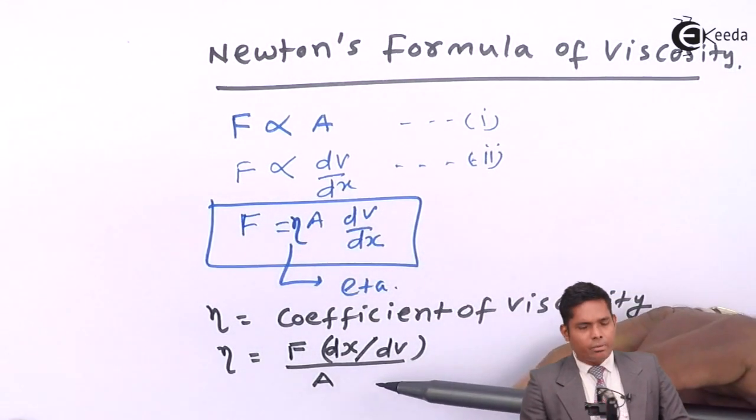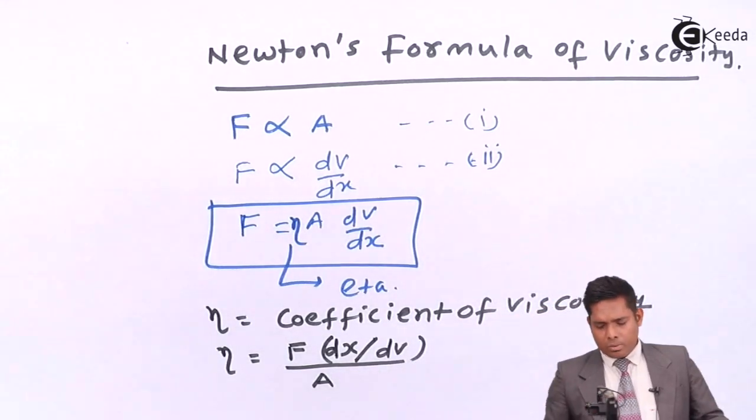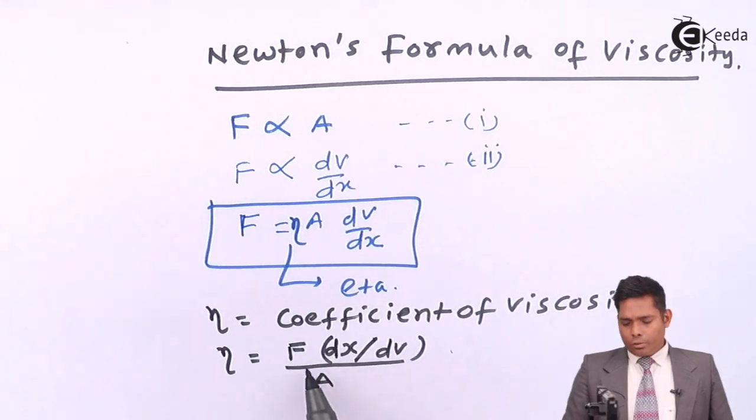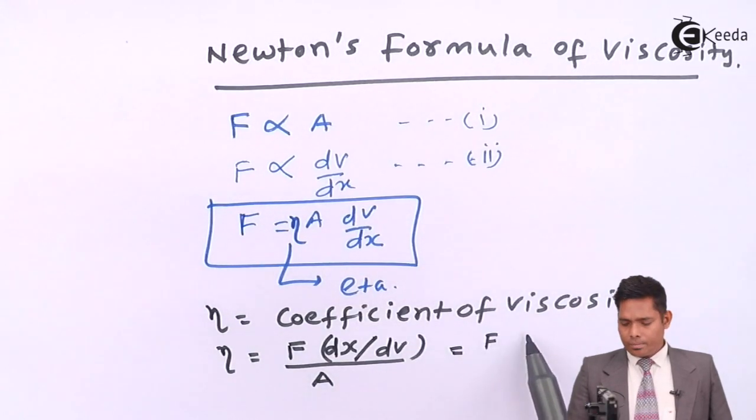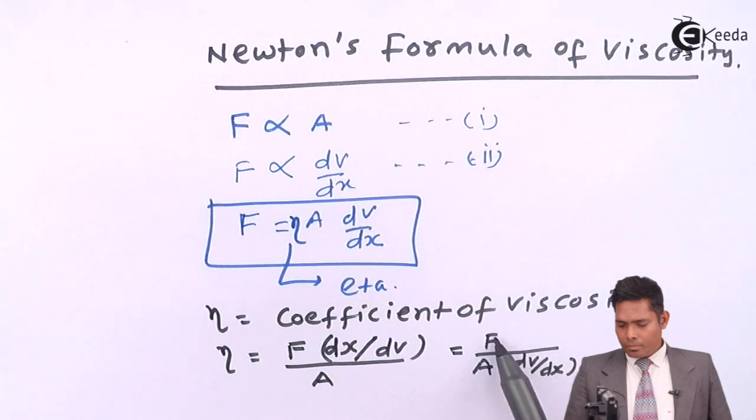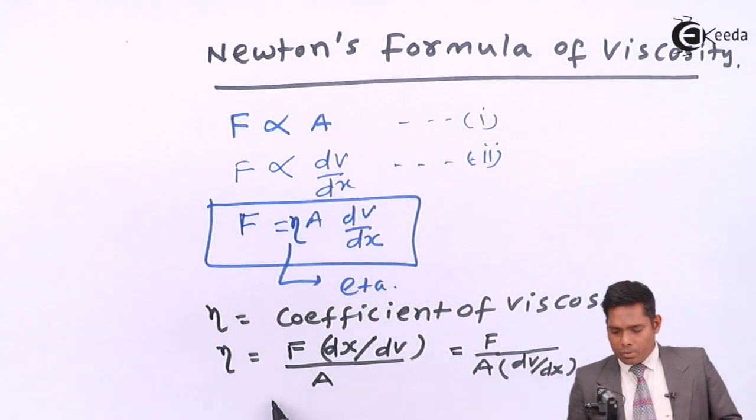Eta is F divided by A divided by dv by dx or dx by dv. You can say this way also. So you club these values. This will be, I can write like this. This is Newton, this is meter square, this is one upon second. So Newton second per meter square.